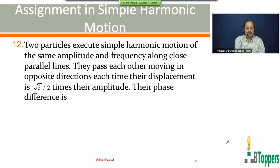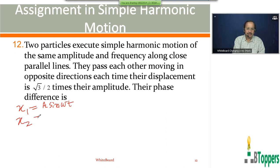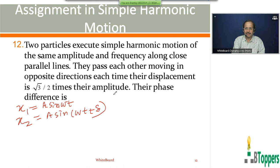If we write the displacement from the mean position for one of the particles as x₁ = A sin(omega·t), and for the second as x₂ = A sin(omega·t + delta), where delta is the phase difference between the particles, then at the instant they cross each other, x₁ equals x₂.